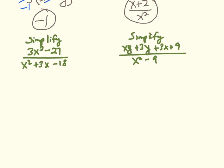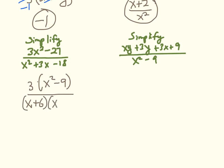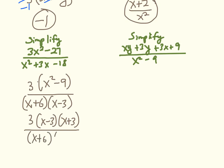I have 3x squared minus 27 over x squared plus 3x minus 18. I factor out 3 from the numerator to get 3 times (x squared minus 9). For the denominator, factors of negative 18 that sum to 3 give (x plus 6)(x minus 3). The numerator's x squared minus 9 is a difference of two squares, factoring to (x minus 3)(x plus 3). The (x minus 3) factors cancel, and the final answer is 3 times (x plus 3) over (x plus 6).